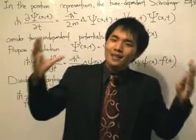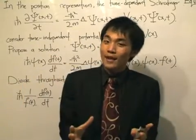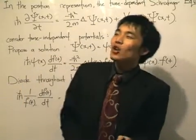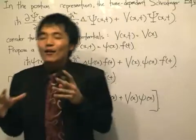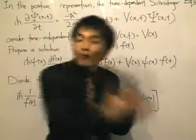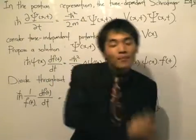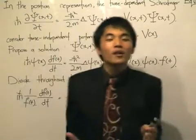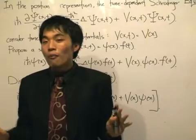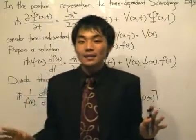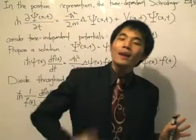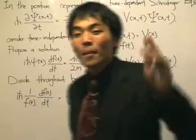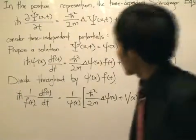That comes by solving the time-dependent Schrödinger equation, and today we are going to look at how we can really move on from there. The time-dependent Schrödinger equation is a partial differential equation, not easy to solve by any standards, but we want to really progress and see how we can move on from postulate number five.